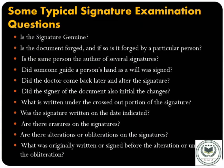The questions that arise during signature analysis include: Is the signature genuine? Is the document forged? Is the same person the author of several signatures? Did someone guide a person's hand as they signed? Did someone alter the signature after the fact? Did the signer also initial the changes? What is written under the crossed-out portion? Was the signature written on the date indicated? Are there erasures, alterations, or obliterations on the signature? What was originally written or signed before or under any alteration?